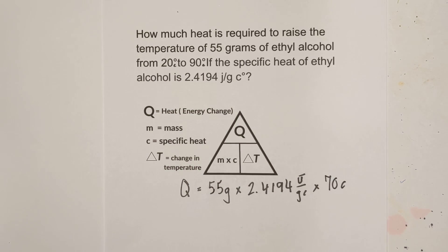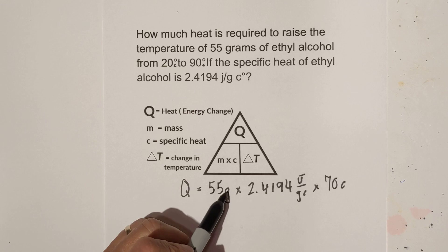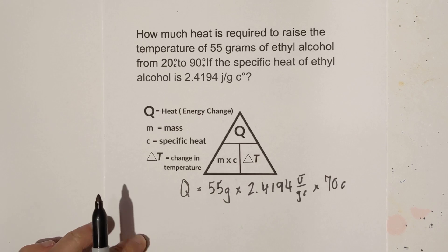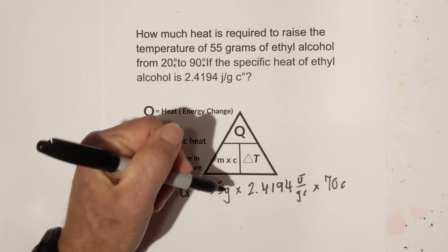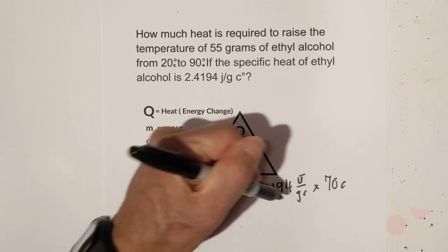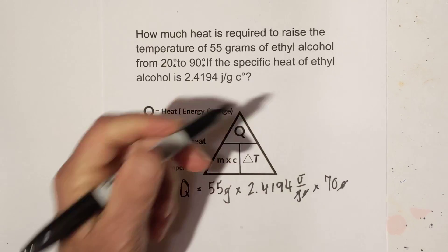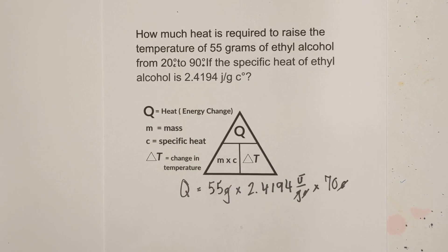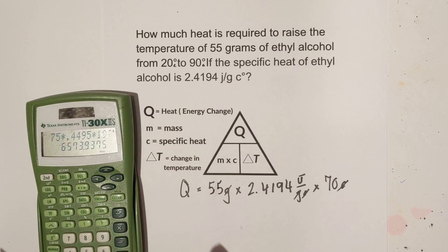It's very important you make sure you keep your units in so you can cancel them. J is on top, these are on the bottom. Grams are going to cancel, these will cancel and again we're left with joules. Now we use our calculator.